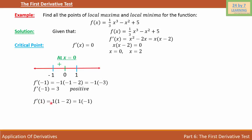Now let's consider x = 1. f'(1) = 1 times (1 - 2) = 1 times (-1) = -1. The first order derivative at 1 equals -1, which is a negative number. No matter what number you consider on the right of 0, you will get a negative for the first order derivative. When the first order derivative changes from positive to negative, we have a local maxima at that point. So f has a local maxima at x = 0.